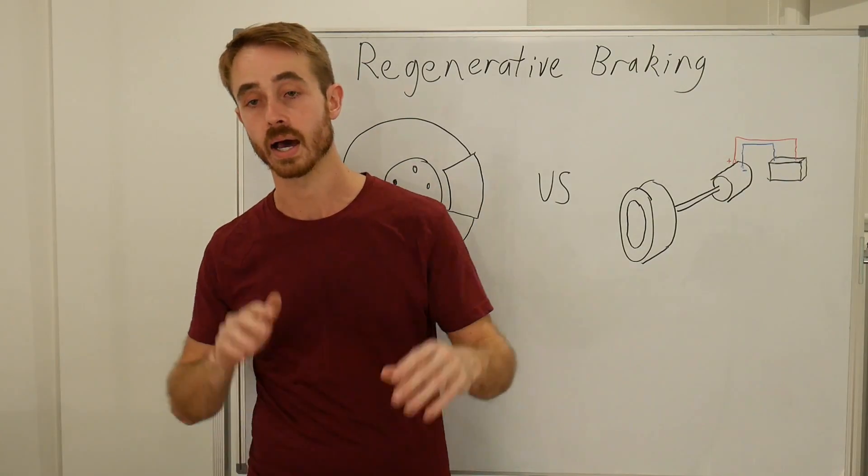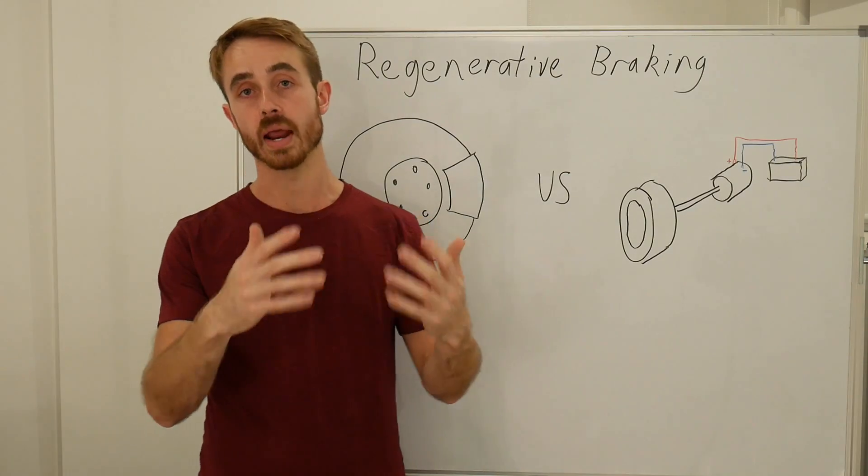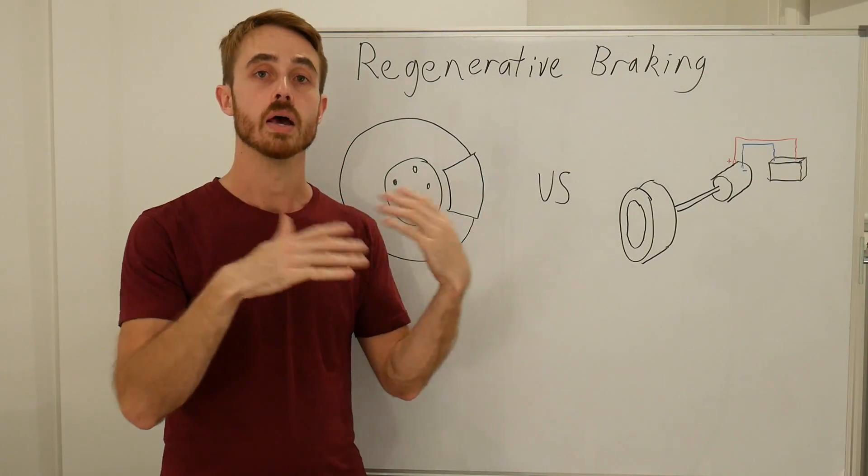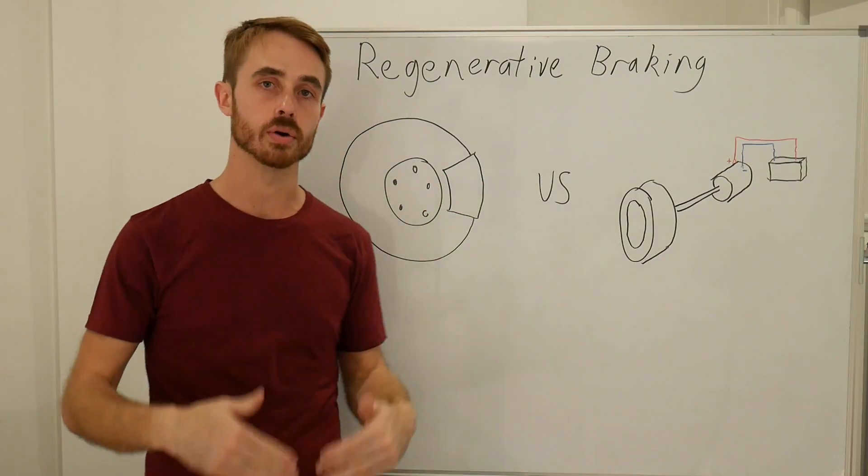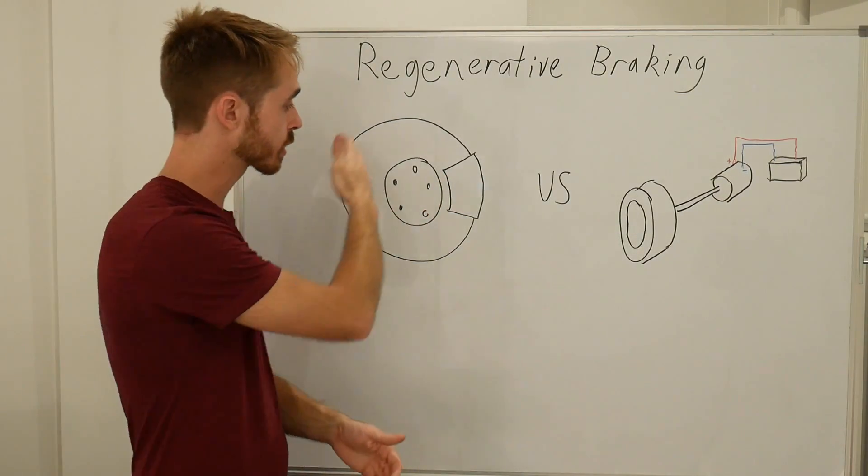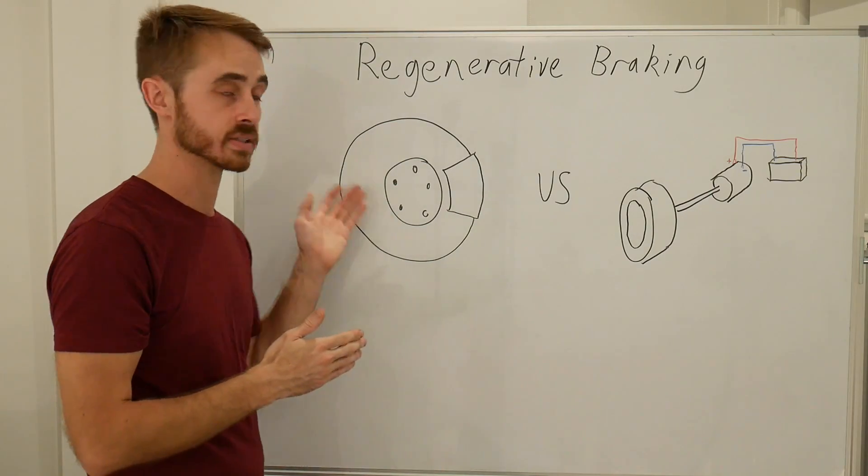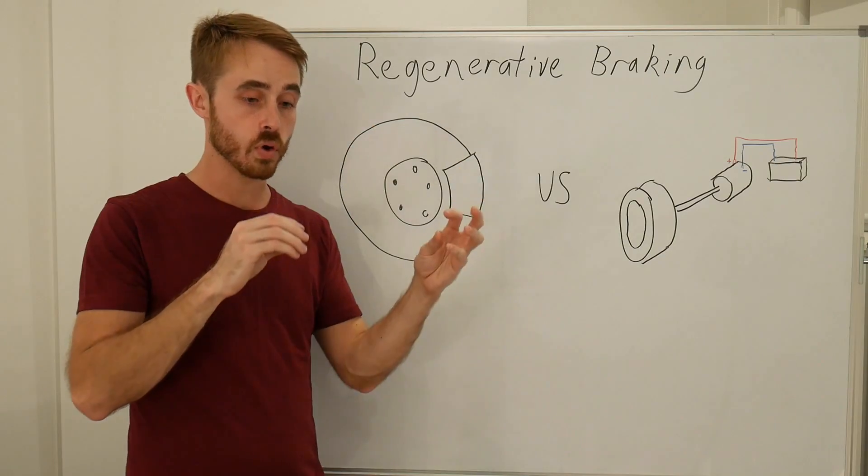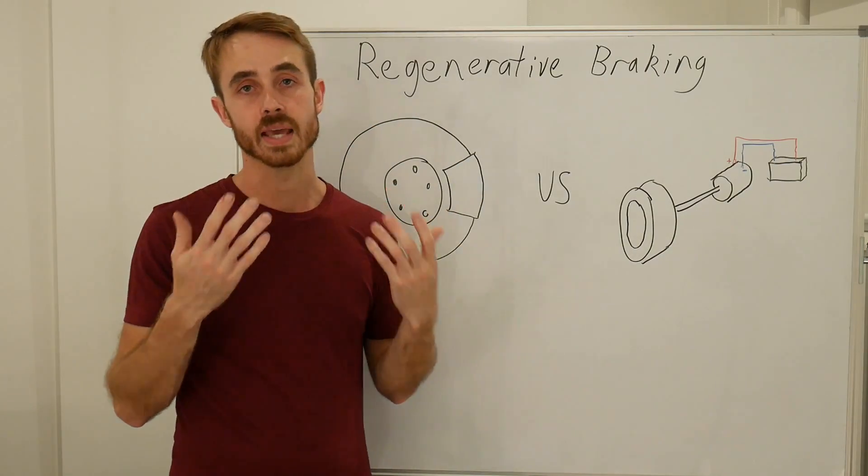So when you go to accelerate a car, you're putting in energy. Your engine or your motor puts in energy to get the car up to speed. But when you brake, that energy has to go somewhere in order for the car to slow down. Now under a conventional braking system, such as a disc brake, which I've drawn here, what we end up with is converting the energy of the car into heat.